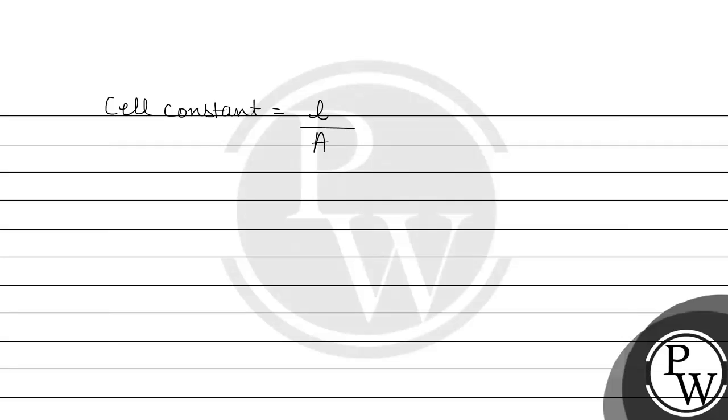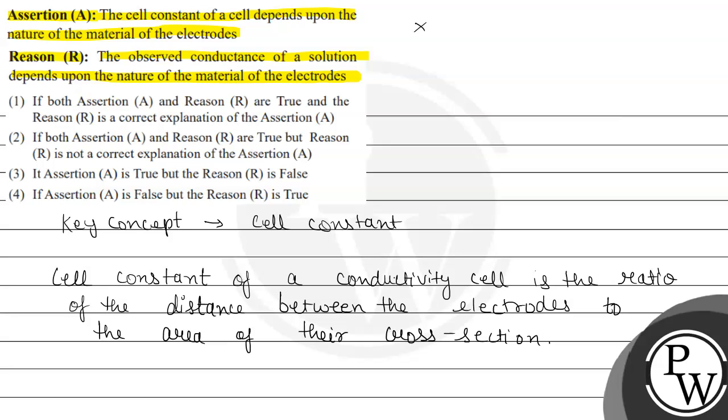But according to the question, it says nature of material of electrode, which is wrong. Because it depends on length or separation between the two electrodes and their area of cross section. So the assertion given is incorrect or false.